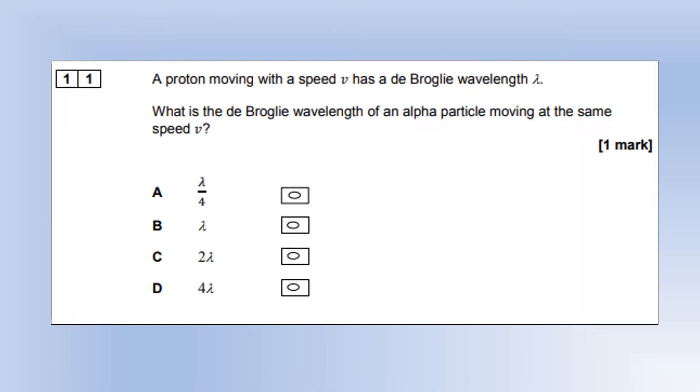A proton moving with speed V has a de Broglie wavelength lambda. What is the de Broglie wavelength for an alpha particle moving at the same speed? Proton mass, I'm going to say is M. So alpha mass would be 4M, because it's two protons and two neutrons. The wavelength of the proton would be h over MV. The wavelength of alpha would be h over 4MV, which is a quarter of the original. So that's going to be A.